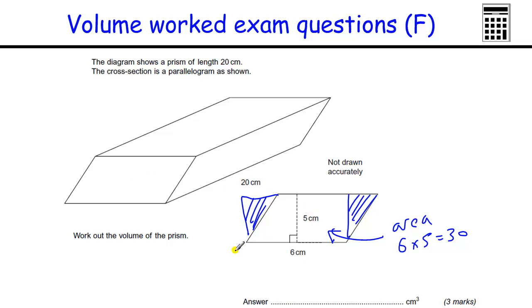And then to work out the volume, we do the area times the length, which is 30 times 20. And 3, 2's are 6. We have two zeros.